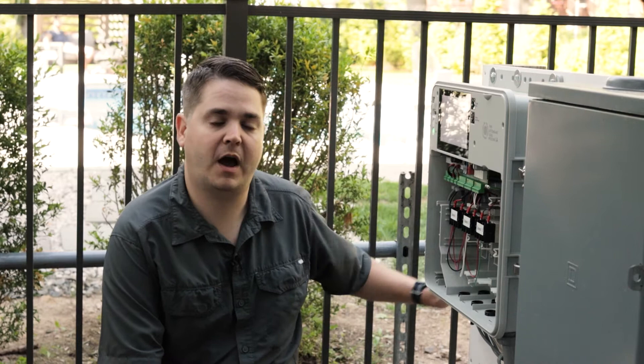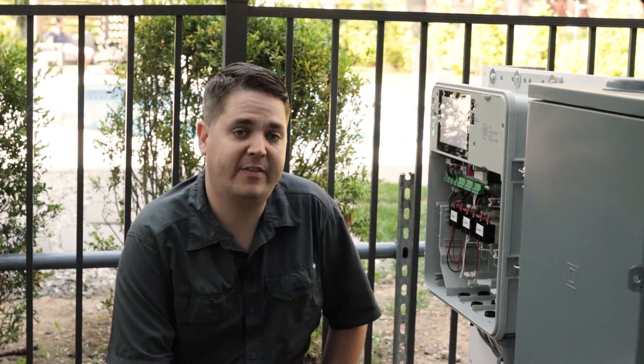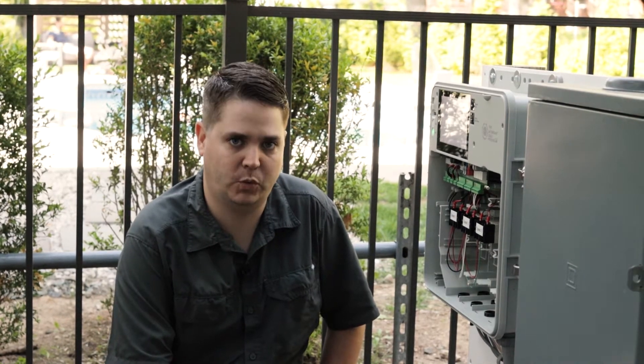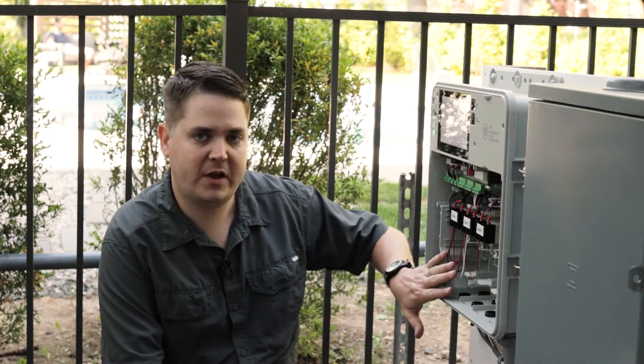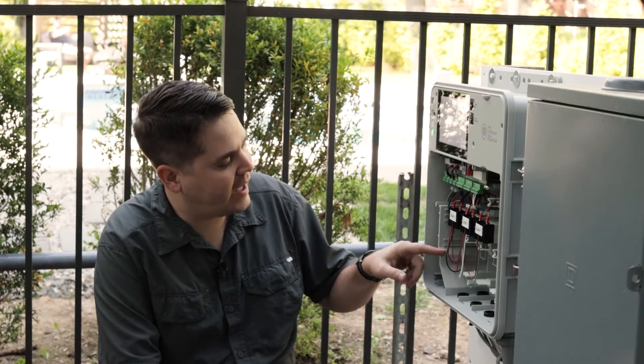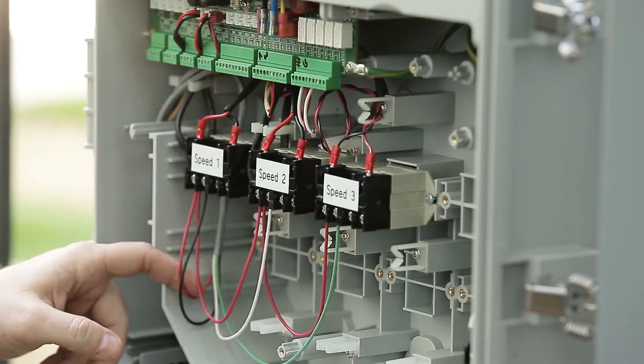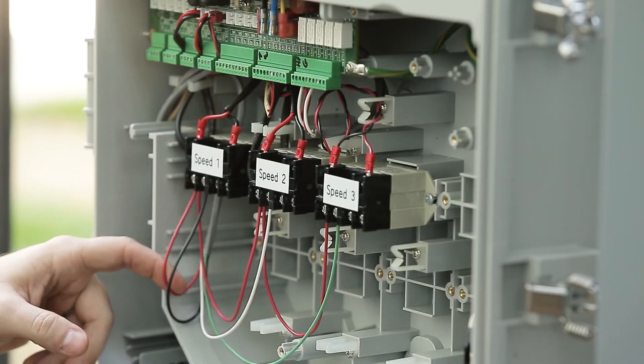So we already have the automation controller on the pump and the wiring attached per the manual. You do want to make sure you follow that manual for the way it's set up. As you come over here into the panel, you can see that we have our wire coming in right here, and this is what connects all the way to the pool pump.